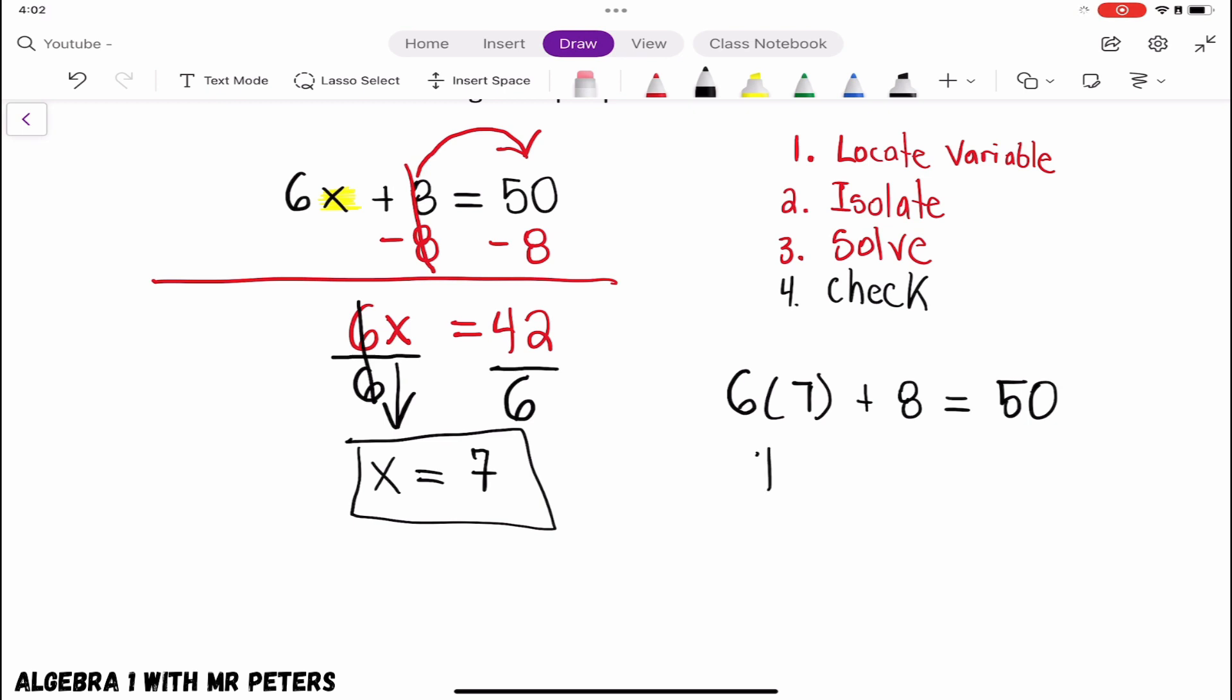So like we said, 6 times 7 is 42. We're going to bring down the rest of our equation. And once I combine 42 and 8, I will notice that 50 is equal to 50. And Mr. Peters is right again.